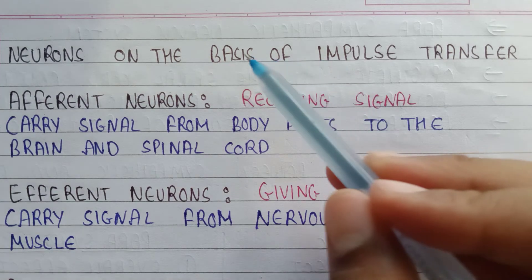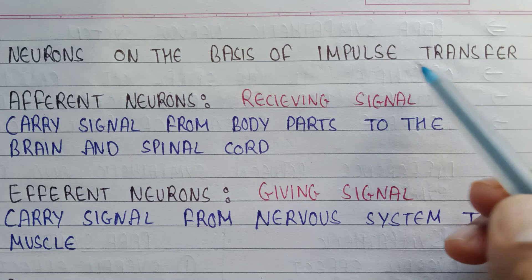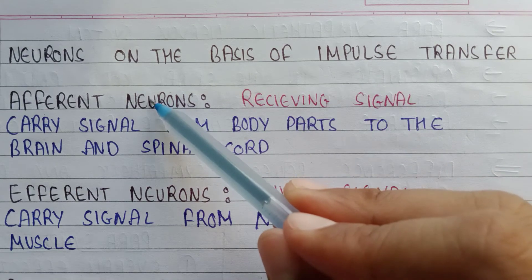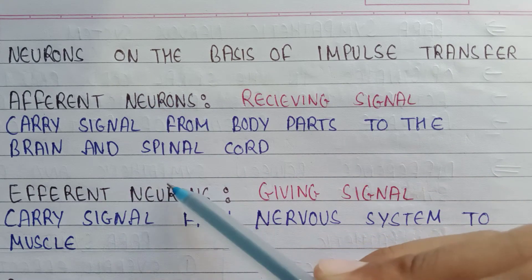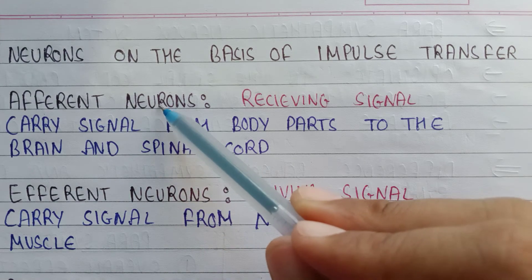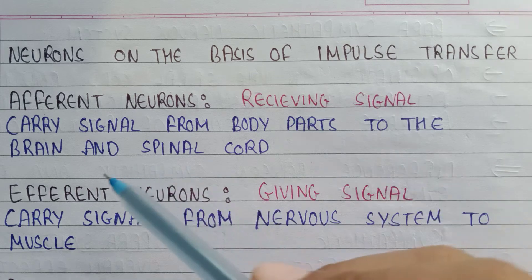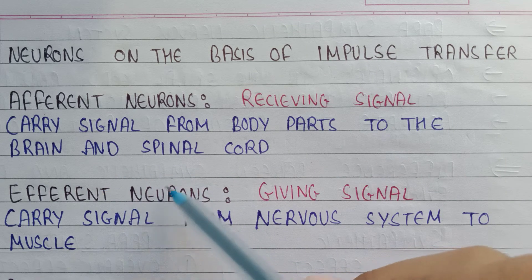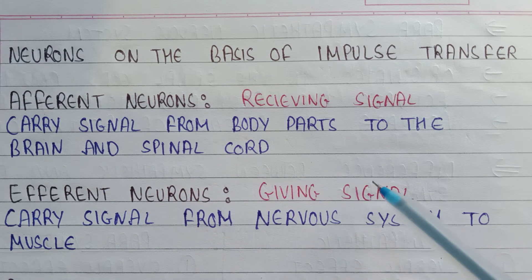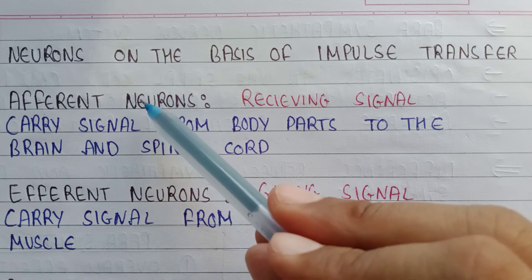On the basis of impulse transfer, neurons are divided into two types: afferent neurons and efferent neurons. Afferent neurons perform the function of receiving signals, whereas efferent neurons perform the function of giving signals.